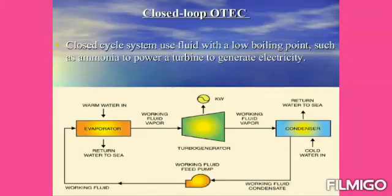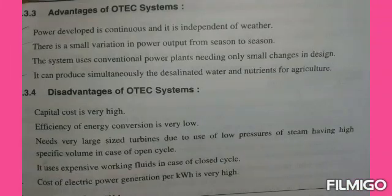The exhausted Freon vapor passes through the condenser where cold water from the deep sea is used to cool it. When cold water from the deep sea and Freon vapor come into contact with each other, condensation of the Freon vapor takes place and it gets converted into liquid Freon. That liquid Freon is then pumped back to the heat exchanger and this cycle repeats.